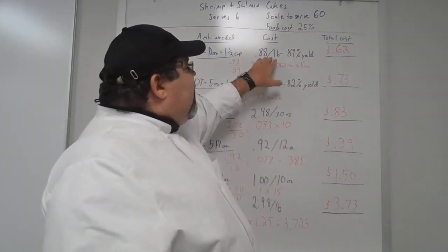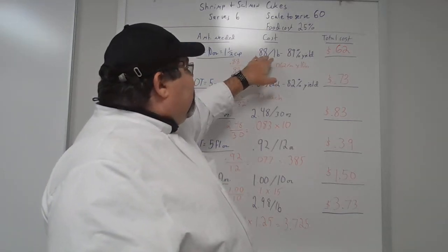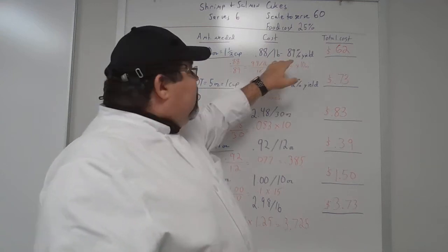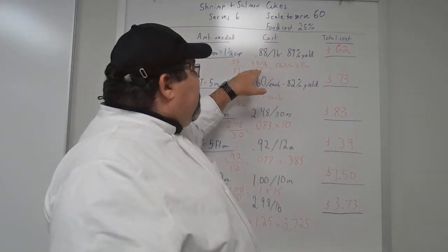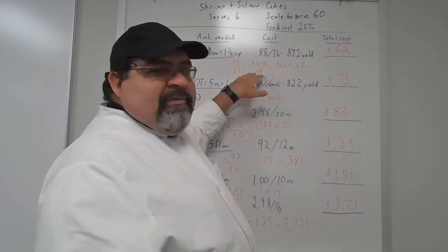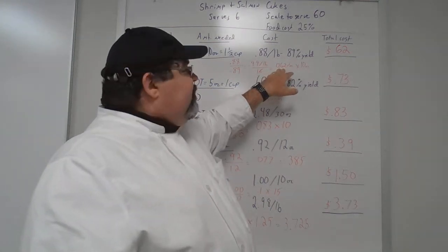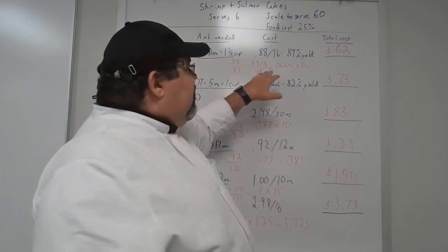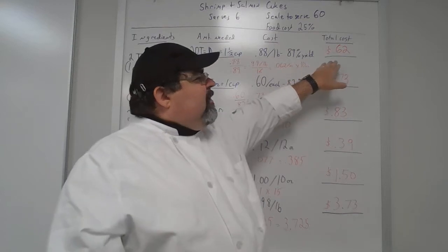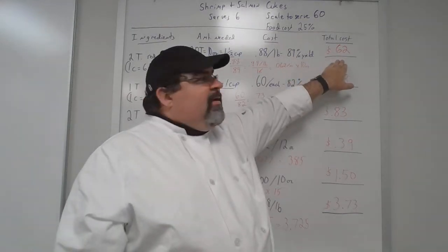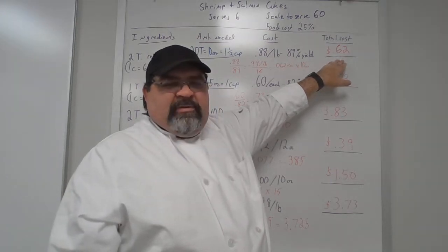To figure out how much the onion is going to cost, you take 88 cents a pound divided by 89% yield to give you 99 cents per pound. There are 16 ounces in a pound, giving you $0.062 per ounce. We need 10 ounces, so multiply $0.062 by 10 to get a total cost of $0.62.